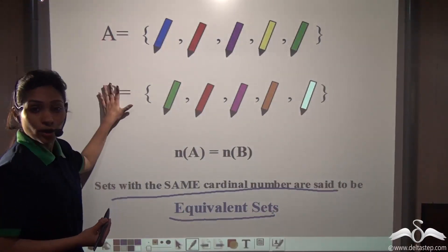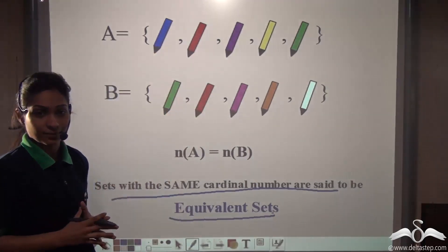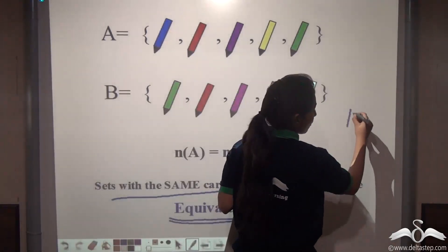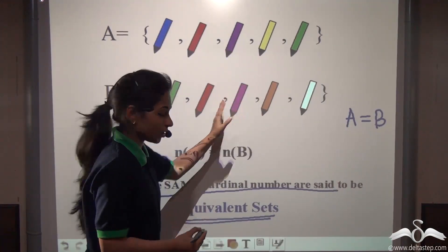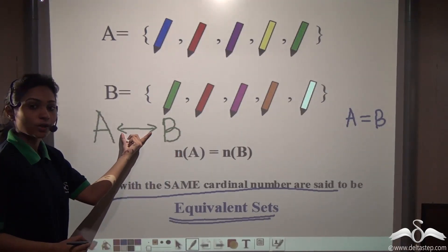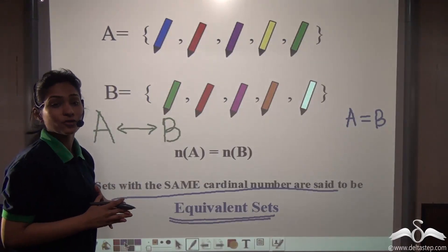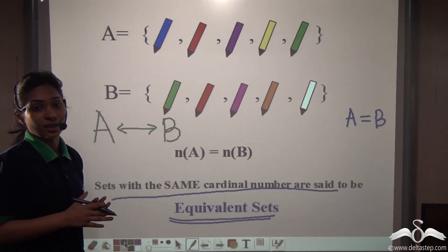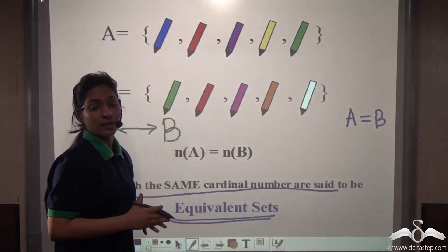So here, though set A is not equal to set B, it is equivalent to set B. We write set A is equivalent to set B using the equivalence symbol. A set A when equal to B uses the equals sign, but here set A is equivalent to set B, so we use the equivalence symbol to denote equivalent sets. It is not necessary that both sets should have the same type of elements — set A may have pens, set B may have boggles — but the number of elements in both should be the same.